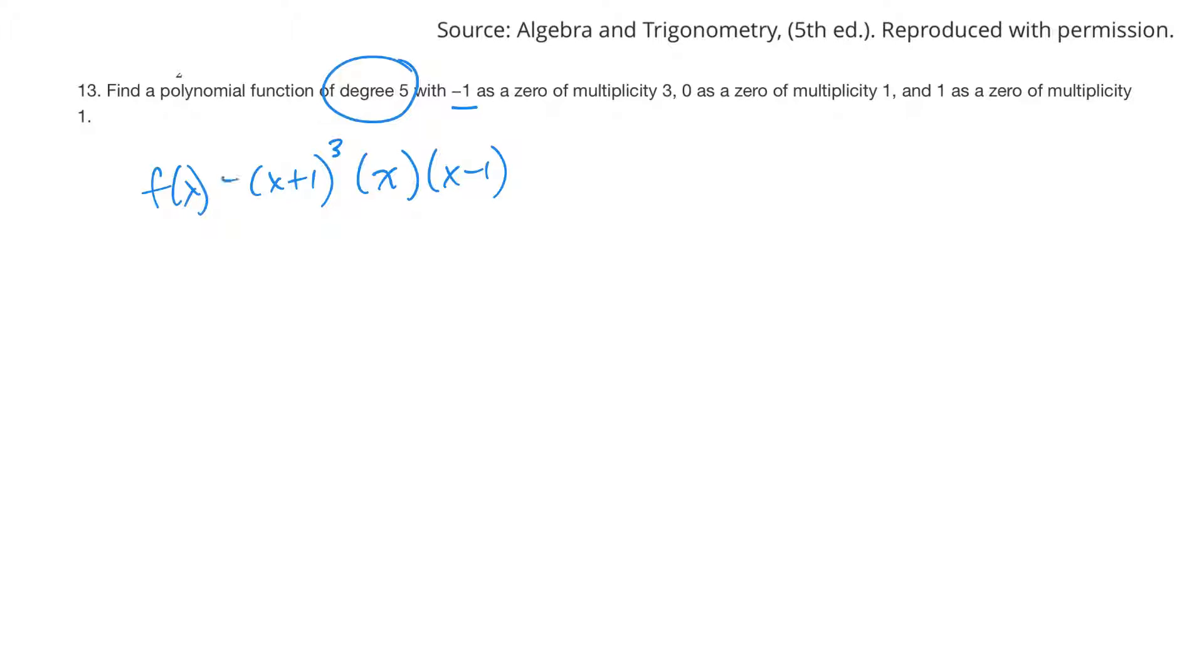And I would probably just leave the function written like that. If you wanted to, just for fun, you could FOIL all this together, and then take what you have there and FOIL it with the next one, and then take that, etc. If you wrote on a test this, I'd be happy with that. If it's a degree 3, I think you can be expected to multiply those out. But if it's degree 5, that's pushing it a little bit.